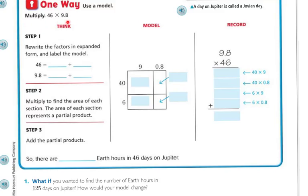We're going to multiply 46 by 9 and 8 tenths. Let's rewrite the factors in expanded form and then label the model. So 46 in expanded form is the same as 40 plus 6. And 9.8 is the same as 9 plus 8 tenths, or 0.8. Step 2: we're going to multiply to find the area of each section. The area of each section represents a partial product.